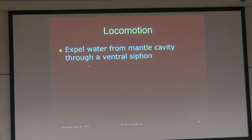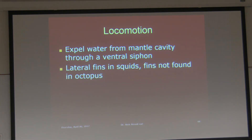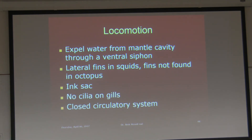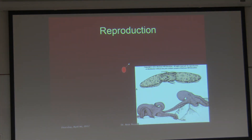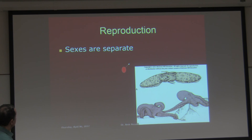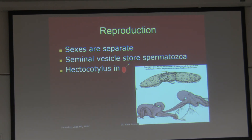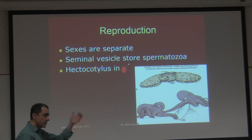Locomotion: expels water from the mantle cavity through the ventral siphon. Lateral fins are found in squids but not in octopus. Some species have an ink sac — if they sense danger they release their ink so they can escape from predators. No cilia on gills. Here is reproduction — two octopus copulating. Sexes are separate. The seminal vesicle stores spermatozoa in the male. The hectocotylus arm is used in the male for reproduction.